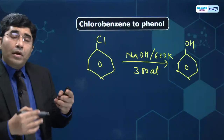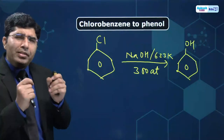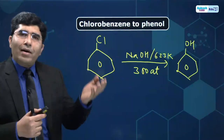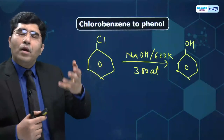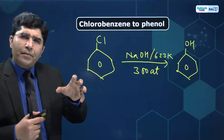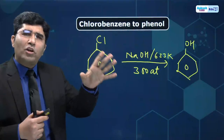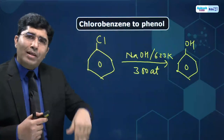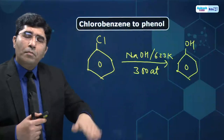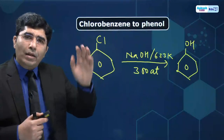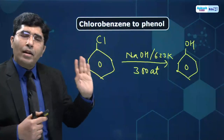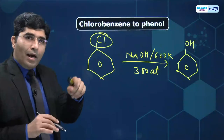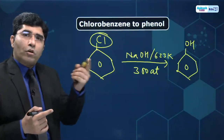One by one we keep introducing groups and this keeps strengthening our basics. I want to tell you again — my previous YouTube session is still on YouTube, watch it again. From benzene to other aromatic compounds having functional groups: benzene to toluene, benzene to halobenzene, benzene to phenol, benzene to benzaldehyde, benzene to acetophenone, benzene to benzoic acid, benzene to aniline, benzene to nitrobenzene — all of that is available.